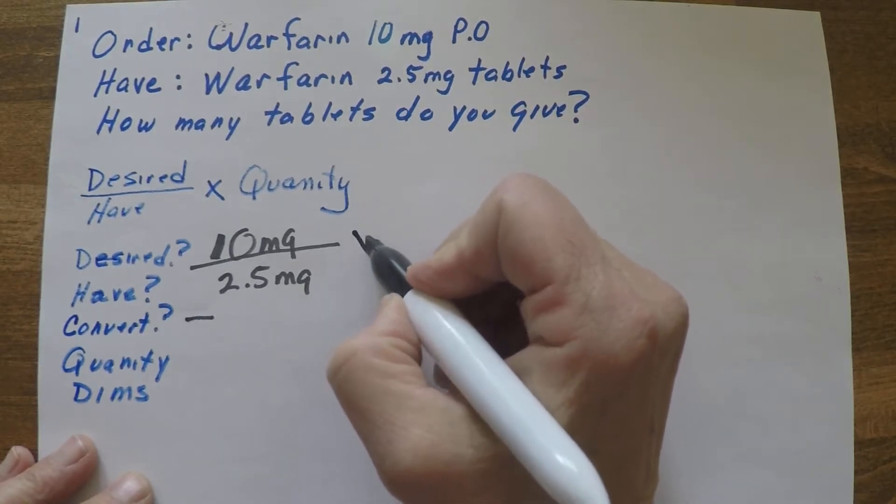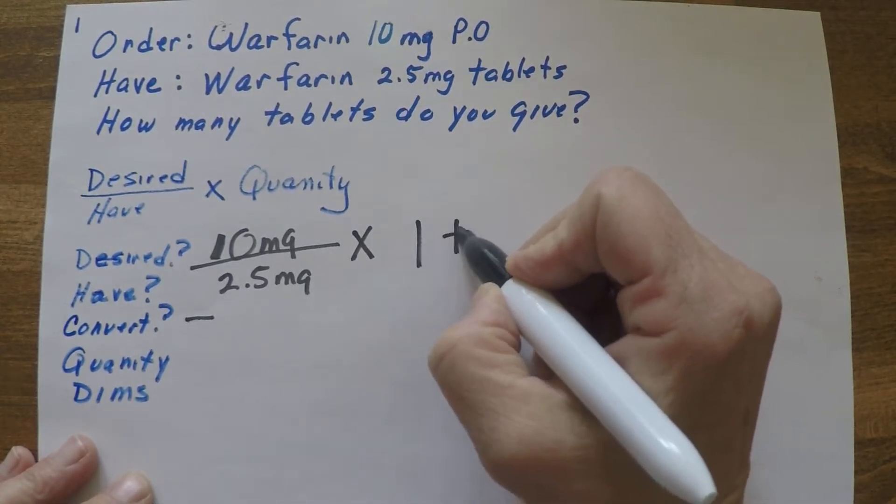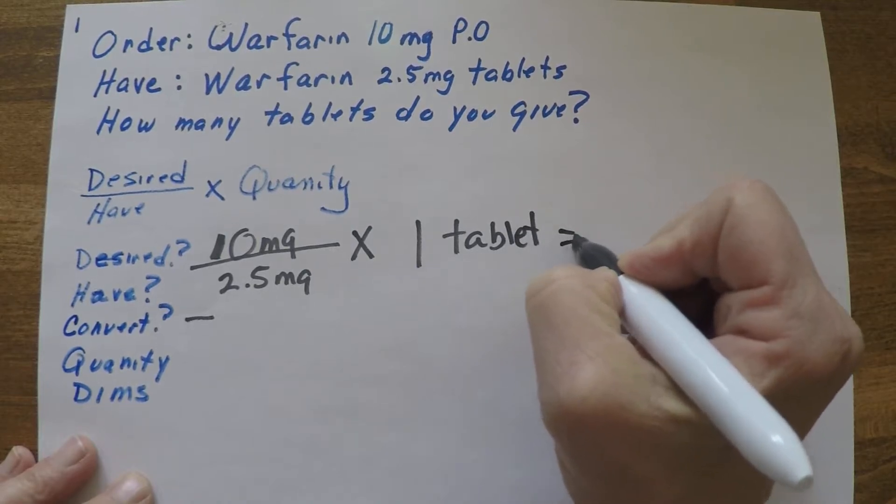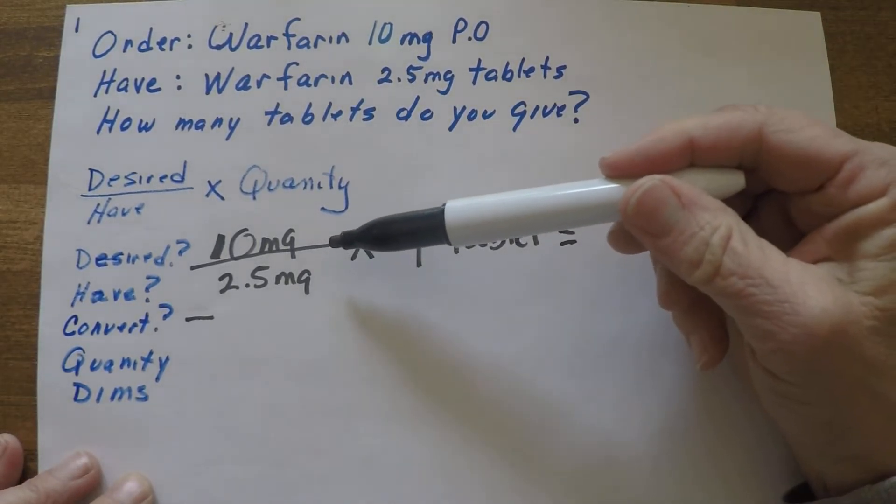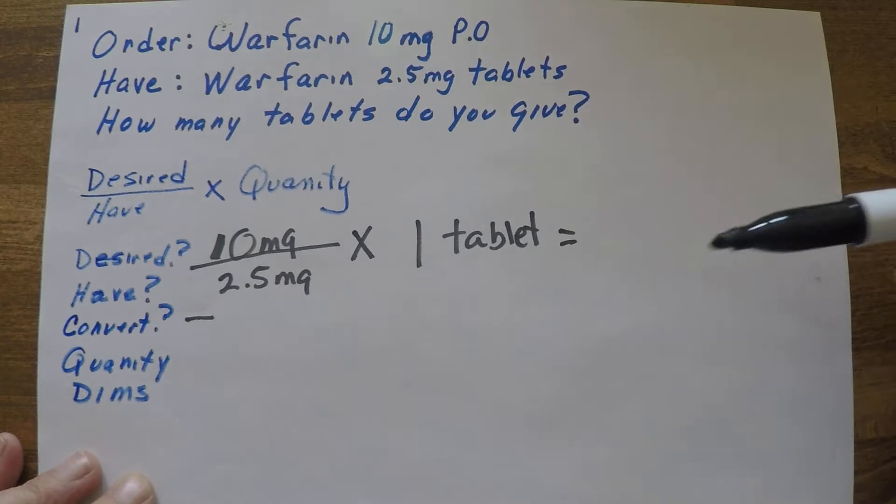So my quantity is 2.5 tablets, so that would be times one tablet. So I just do the math: 10 divided by 2.5 times one equals four tablets.